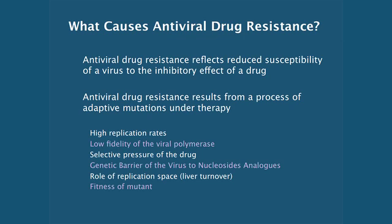In hepatitis B, we've identified six major factors that contribute directly to antiviral drug resistance. These are: high replication rates, the low fidelity of the viral polymerase, the selective pressure or potency of the drug, the genetic barrier of the virus to the nucleoside analogues — meaning the number of mutations associated with that particular drug that result in drug failure — the role of replication space or liver turnover, and finally, the fitness cost or price the virus pays for resistance, which shapes the pattern and prevalence of antiviral drug resistance.